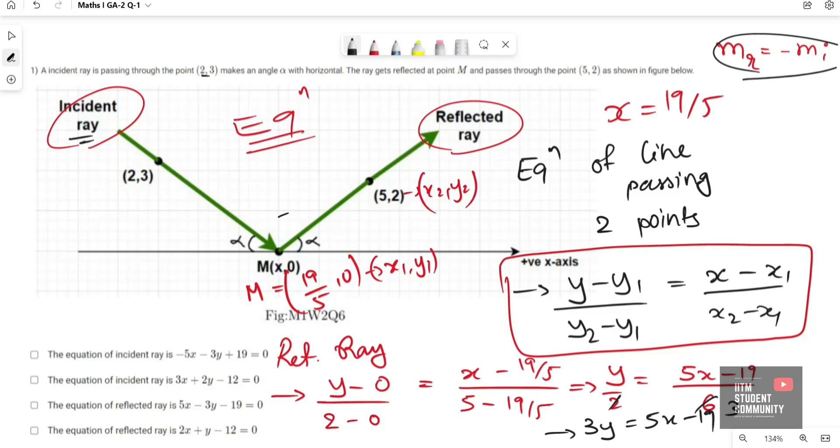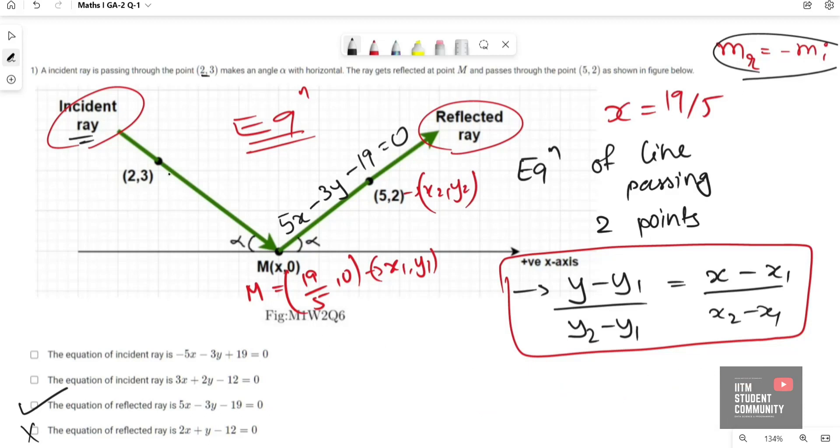So equation of reflected ray is 5x minus 3y minus 19 equals 0. Hence option C is correct, which means option D is wrong.